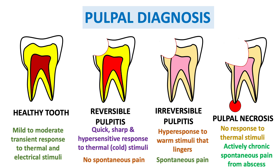For treatment: a healthy tooth needs no treatment, just maintain oral health. For reversible pulpitis, remove the carious part, apply a base, and restore. For irreversible pulpitis, perform endodontic therapy — RCT — and if decay is extensive, give a prosthesis. In pulpal necrosis, if the tooth condition is very poor, extract it; if the tooth can be saved, do RCT and give a prosthesis.